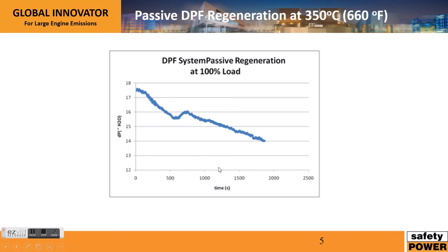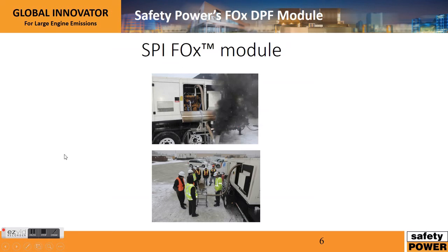Passive regeneration is the type of technology that Safety Power uses. Here are some lab tests of a system at 350 degrees Celsius. This test shows a fully sooted filter with high back pressure across the filter, and you can see that regeneration process occurring, illustrated by the declining pressure drop across that filter.